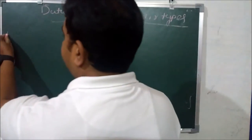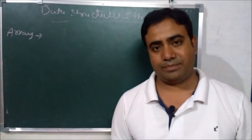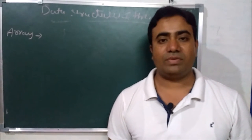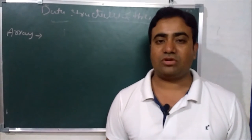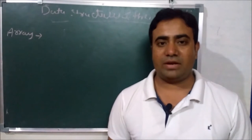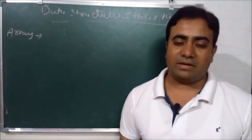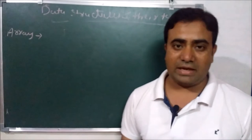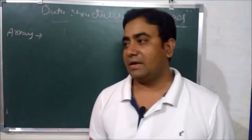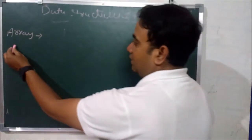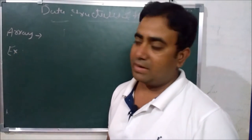What is array? Array is a similar group of data type. For example, in our classroom, student name and student roll number are not the same data type — name is character data type and roll number is integer data type. But array supports only a similar group of data type, like storing only student roll numbers together.